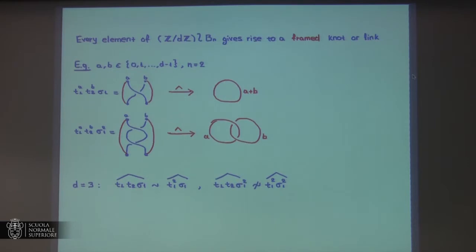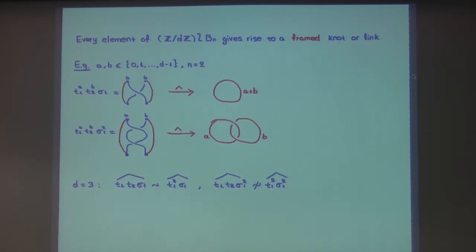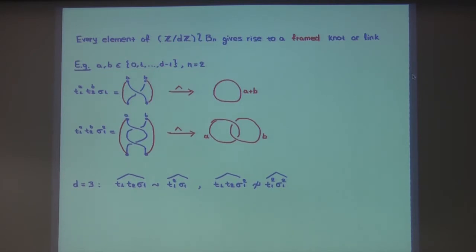Every element of this group gives rise to a framed knot — a regular knot with weights attached to each component. The closure works exactly the same way: first dot to first dot, second dot to second dot. We take the closure and the weight is the sum of weights appearing in the components forming the link. In the first case where we get a single knot, we get the knot with weight A+B. In the second case where we have two separate components, each component has its own weight A and B.